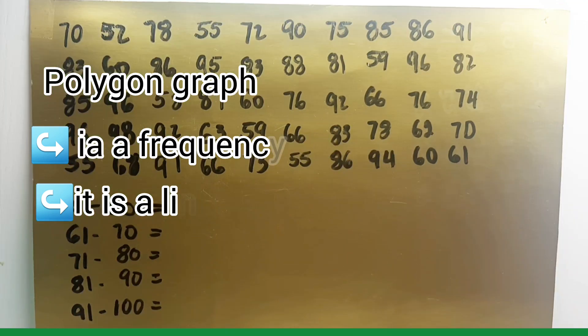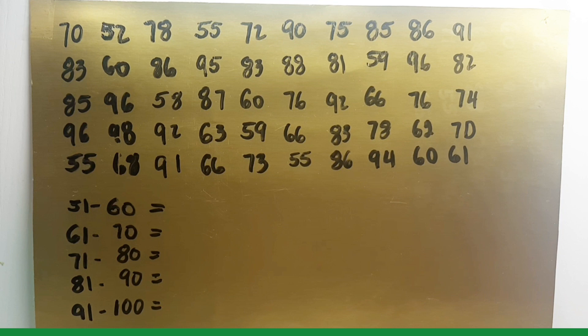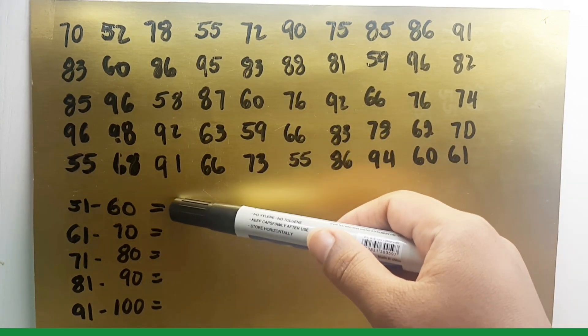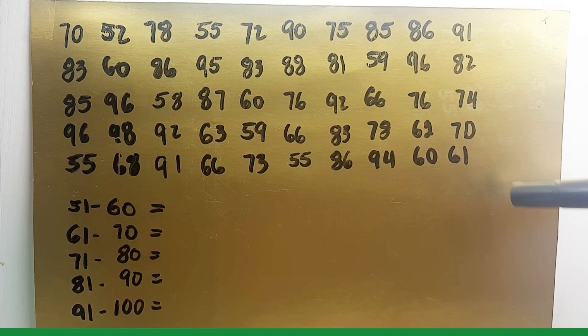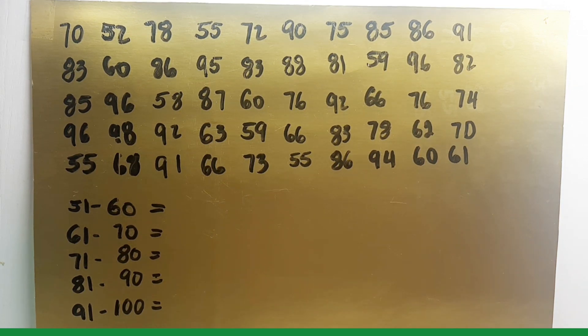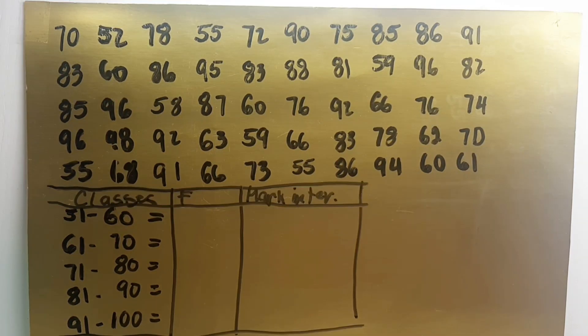So example, here is the table. First we are going to find the frequency of each class interval. This is our class intervals divided into 5, and this is the raw score. It is the raw score of students who took an exam. First you are going to find the frequency of each class between 51 to 60. Let's count the score of the students from 51 to 60 and that will be the frequency.